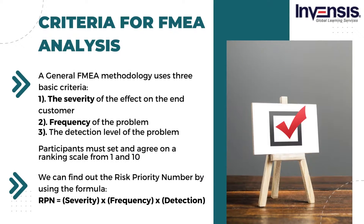The second step is to set the criteria for FMEA analysis. A general FMEA methodology uses three basic criteria to assess an issue. First, the severity of the effect on the end customer — this criterion incorporates all standards important to the specific industry, such as safety standards, production continuity, loss of business, damaged reputation, and environment. Second is the frequency of the problem, which ranks the probability of each failure mode during the expected product's or process's lifetime. Third is the detection level of the problem — that is, how easy it is to detect.